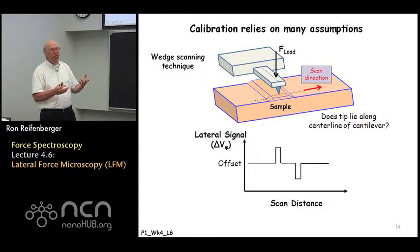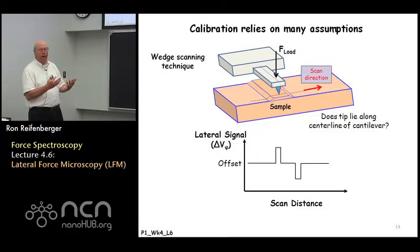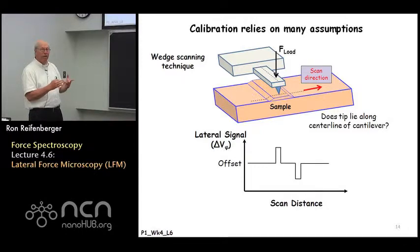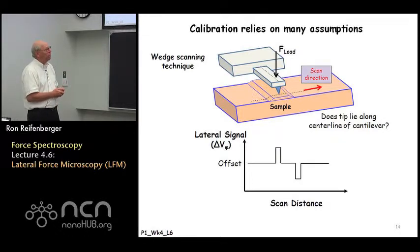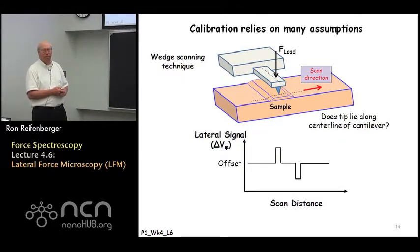The difficulty with all these calibration schemes is that they rely on knowing the geometric shape of the probe with great detail. If the apex of the tip is not aligned along the center line of the cantilever, you get contributions to the signals from that offset distance. Taking all that into account for a systematic calibration is a real challenge, as anyone reading the literature will conclude.